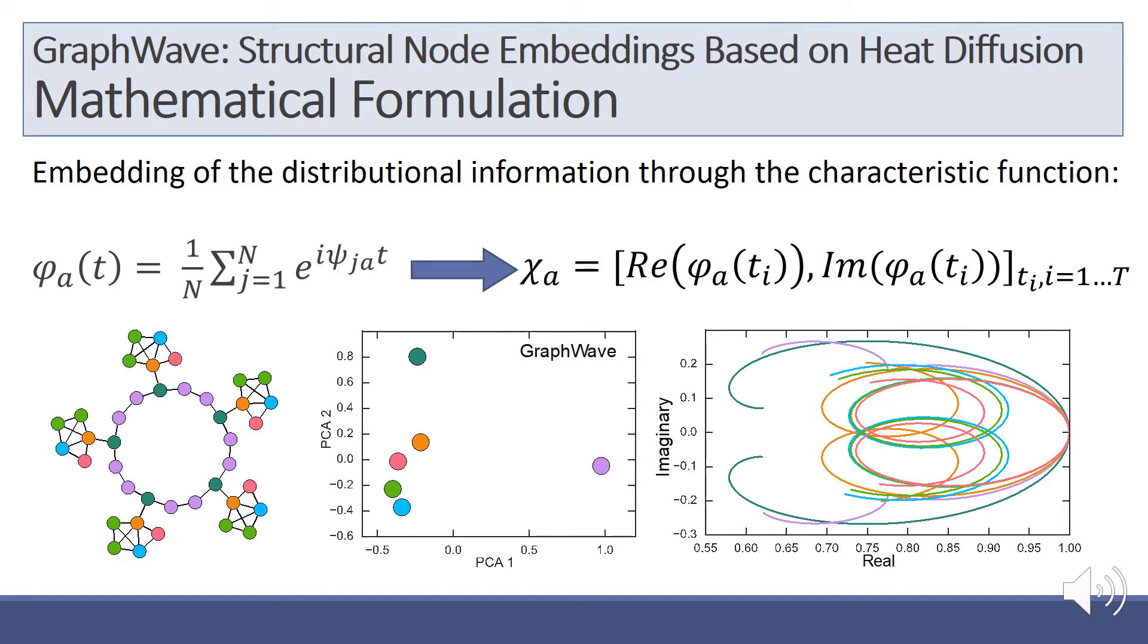Because the information is distributional, we have to embed it in a Euclidean vector. We propose to do so by appropriately sampling along the parametric curve induced by the characteristic function associated to each node's diffusion profile.